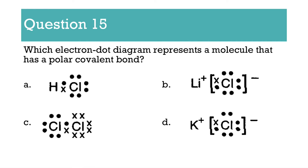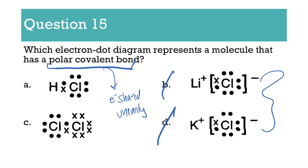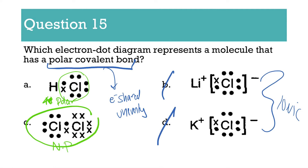Number 15: which electron dot diagram represents a molecule that has a polar covalent bond? Polar covalent means the electrons are shared unevenly. B and D show ionic bonds because you have those ions. So we're between A and C. A shows a polar bond because the electrons are shared unevenly. C shows a non-polar — you'll see electrons are shared evenly. Here is even, here is uneven. A is our answer.